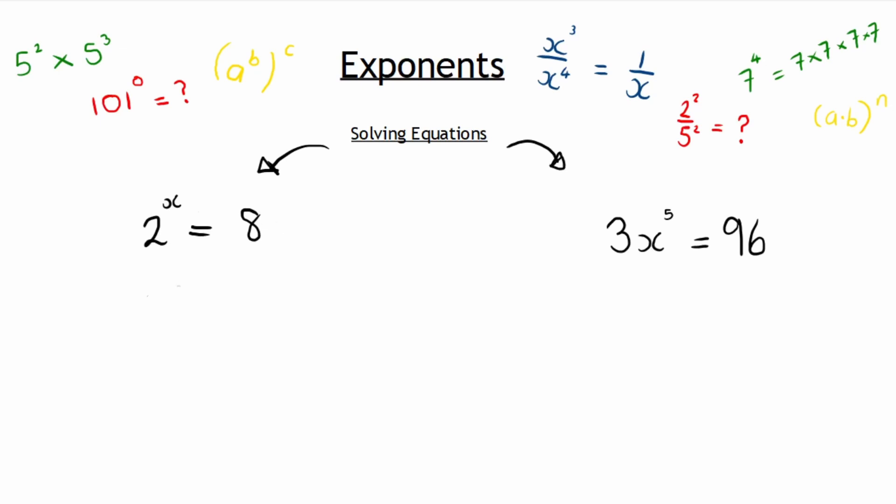And so in the first example we have 2 to the power of x equaling to 8. If I were to solve an equation where x is in the exponent, then I must always first get the bases on either side of the equal sign equal to each other.